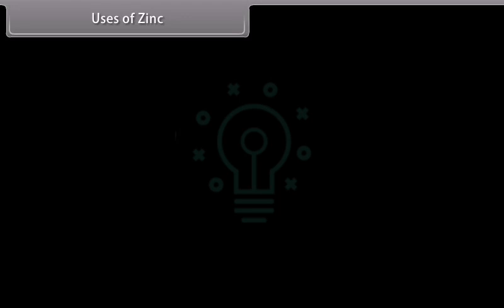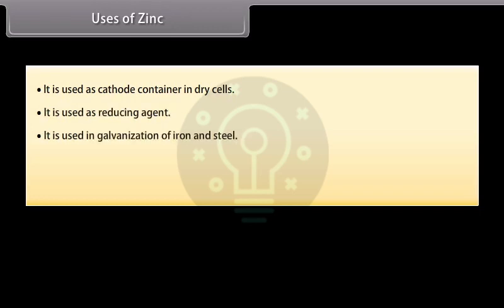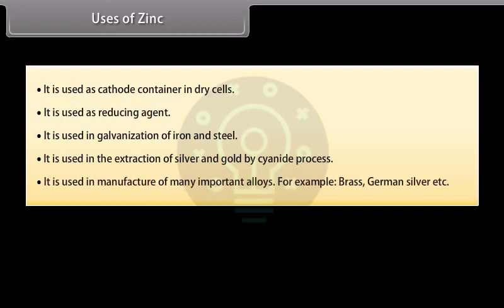Uses of Zinc. It is used as cathode container in dry cells. It is used as reducing agent. It is used in galvanization of iron and steel. It is used in the extraction of silver and gold by cyanide process. It is used in manufacture of many important alloys. For example, brass, German silver.